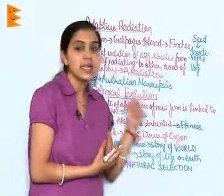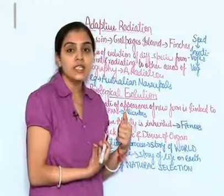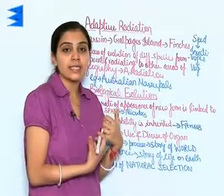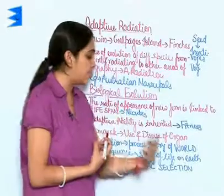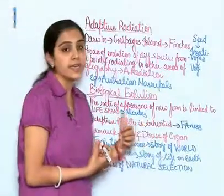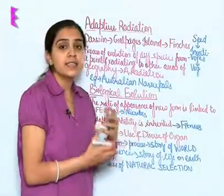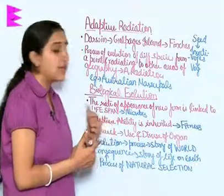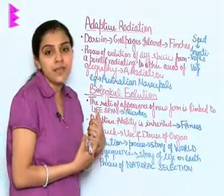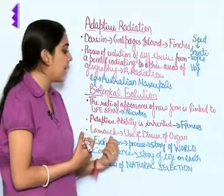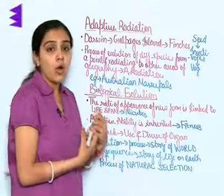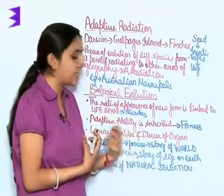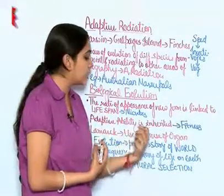Adaptive ability is inherited. The adaptive ability leads to the ultimate consequence, which is fitness, and this fitness leads to natural selection — being selected by nature. If inherited, that means genetic bases are involved in adaptive ability.